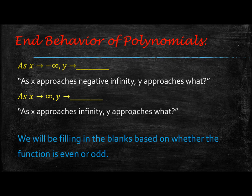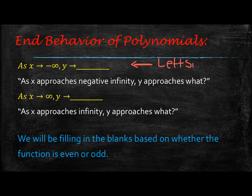As x is approaching negative infinity, that's when x is moving to the left — what is happening to the graph? What's happening on that left side? If it's moving up, then we're going to say y is approaching positive infinity. If it is moving down, then we're going to say y approaches negative infinity. You're just going to be filling in the blank with what is happening.